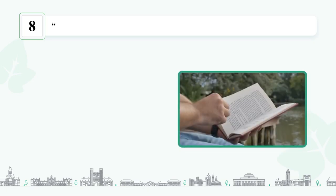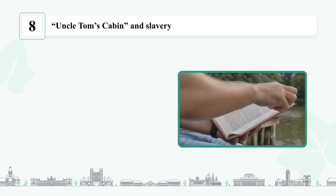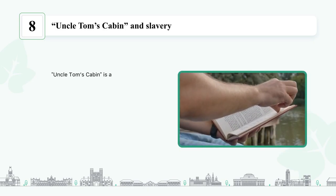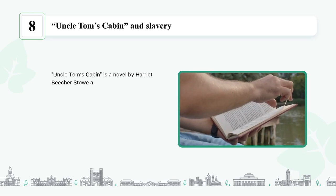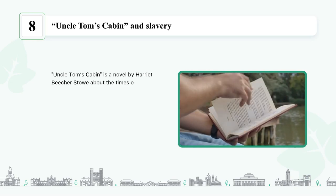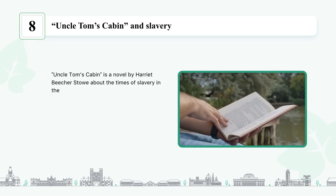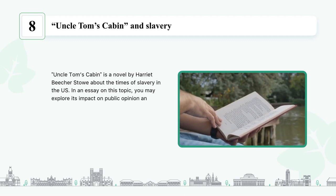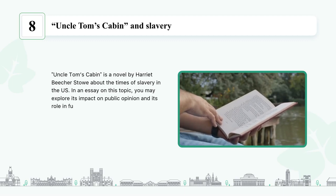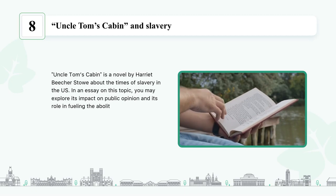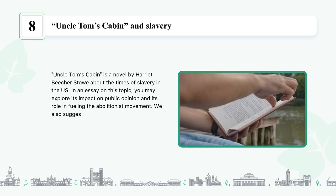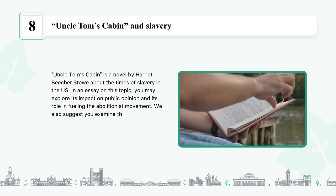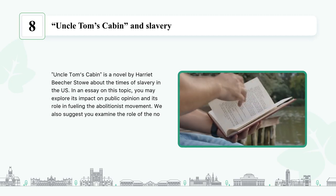'Uncle Tom's Cabin' and slavery: 'Uncle Tom's Cabin' is a novel by Harriet Beecher Stowe about the times of slavery in the U.S. In an essay on this topic you may explore its impact on public opinion and its role in fueling the abolitionist movement. We also suggest you examine the role of the novel in popular culture.